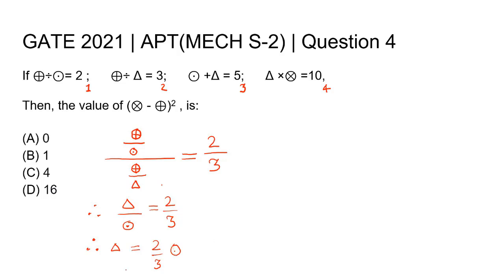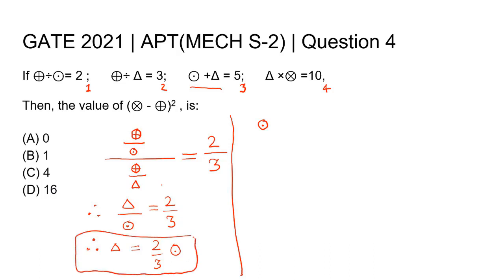Now if we look at equation 3, it has only two variables. We have already found the relation between those two variables from equations 1 and 2. So let's put the value of triangle into equation 3. Let's call this result equation 5.